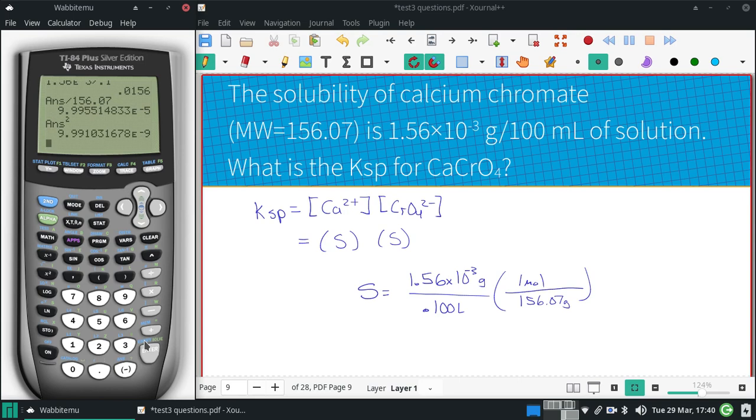And we get a Ksp. We'll be rounding that. It's going to round up to 1.0 times 10 to the negative eighth.